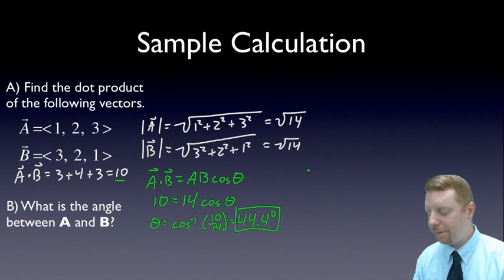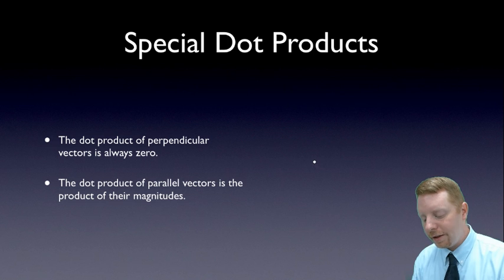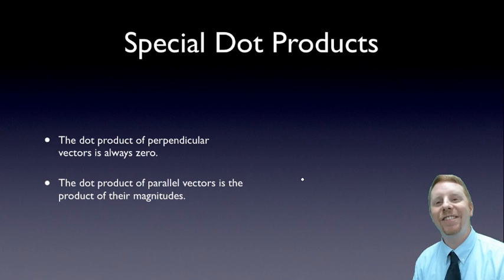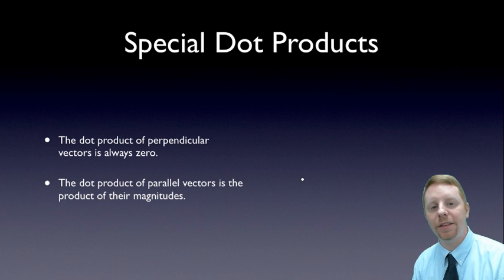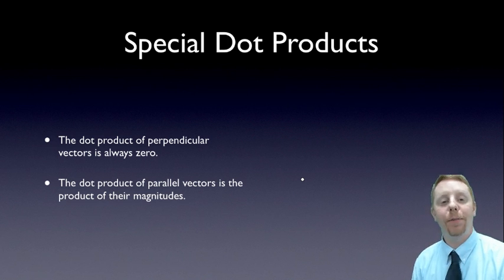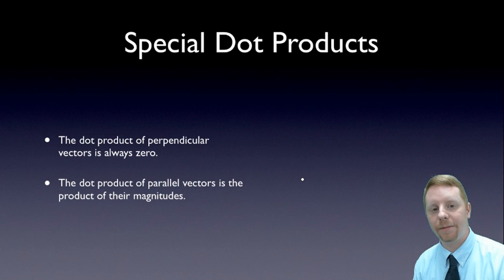Let's look at some special dot products. The dot product of perpendicular vectors is always zero. It has to be. If you think about what it means to be a dot product, it's the component of the first vector in the direction of the second. If they're perpendicular, there is no component of the first vector in the direction of the second. Therefore, the dot product of perpendicular vectors is zero.